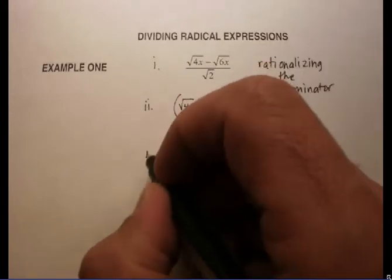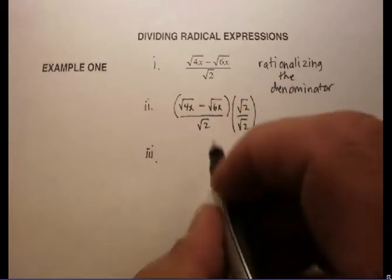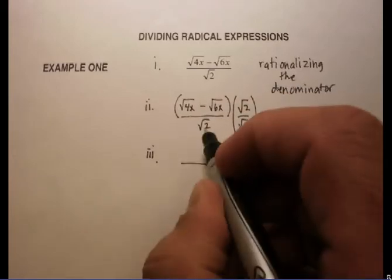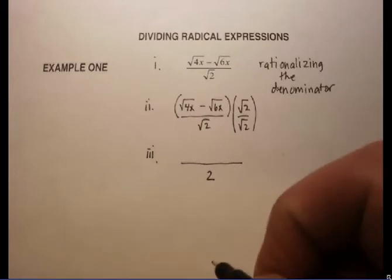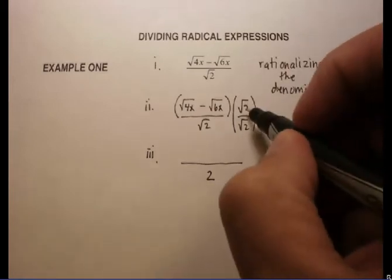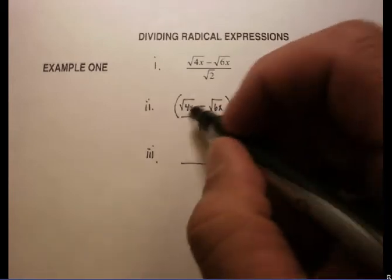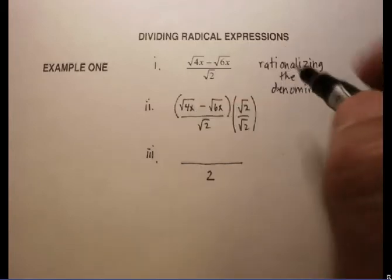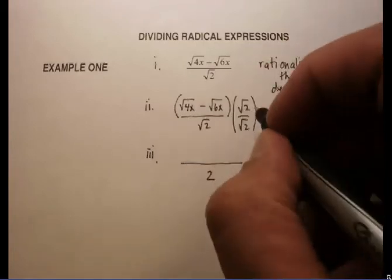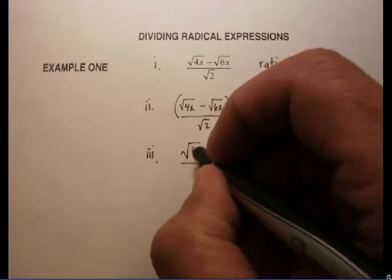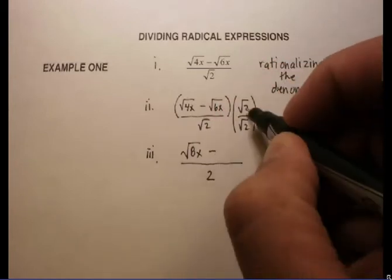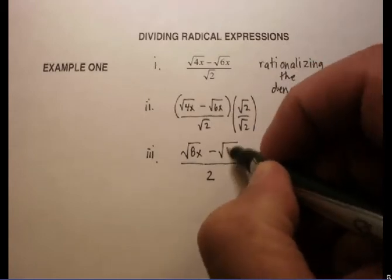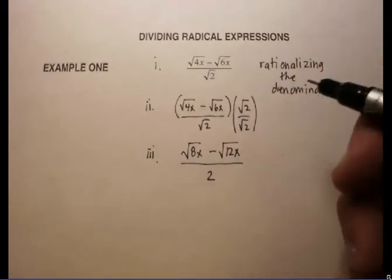And that is going to give me, in my denominator, the square root of 2 times the square root of 2 is just 2. That's easy enough. The square root of 2 times the square root of 4x is going to be actually the square root of 8x, and that's going to be minus the square root of 12x.